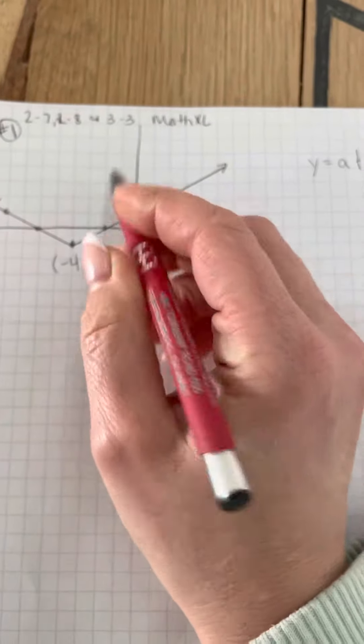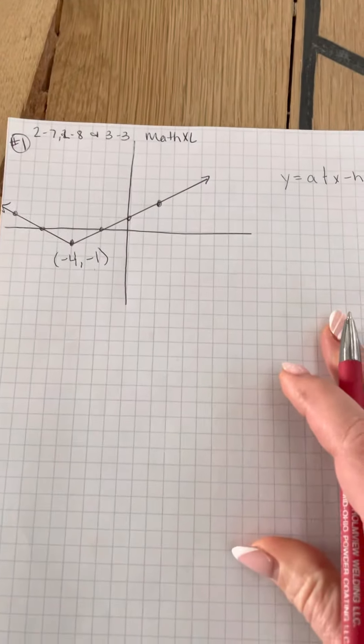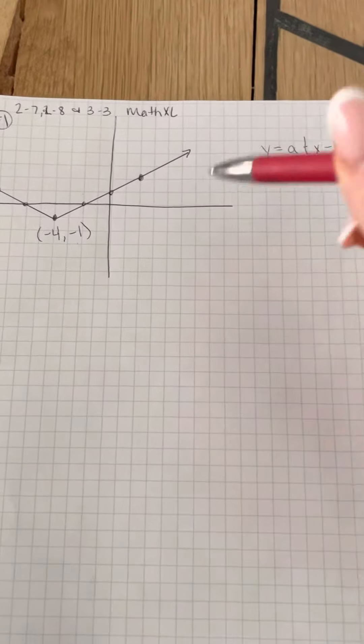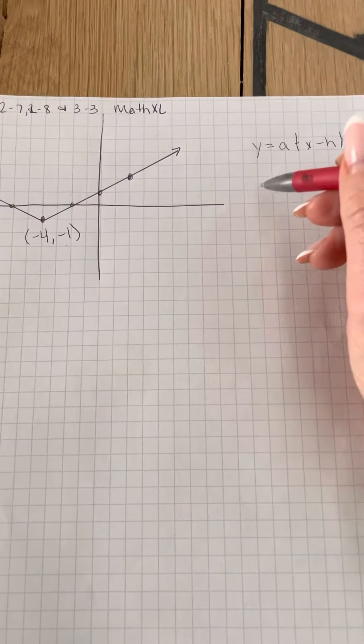And then down one, which is negative one. So since it's negative four, negative one, I'm going to plug that in for H and K. I'll write that down.